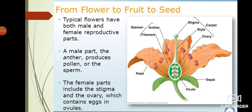Next is pollination. There are two types of pollination: self-pollination and cross-pollination. Pollination is the transfer of pollen grains from anther to the stigma. If it transfers within a single flower from anther to stigma, that is called self-pollination. If the pollen grains transfer from one anther to another flower's stigma, that is called cross-pollination.